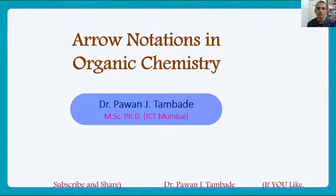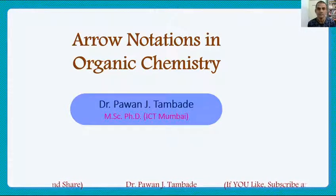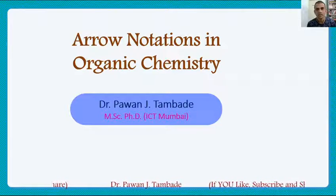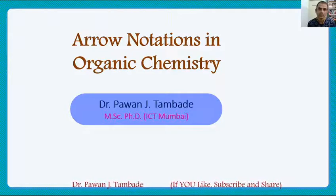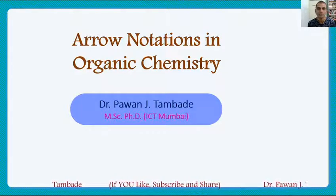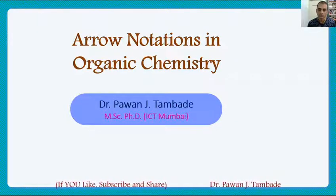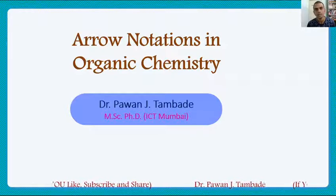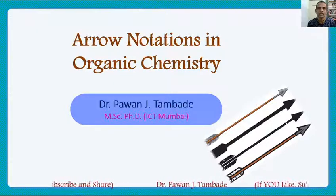Dear friends, science makes use of a variety of symbols to communicate effectively. Normally you encounter some symbols like alpha, beta, gamma, some signs like positive and negative, and many more symbols. In the case of organic chemistry, the most common symbol one encounters is arrow notation.